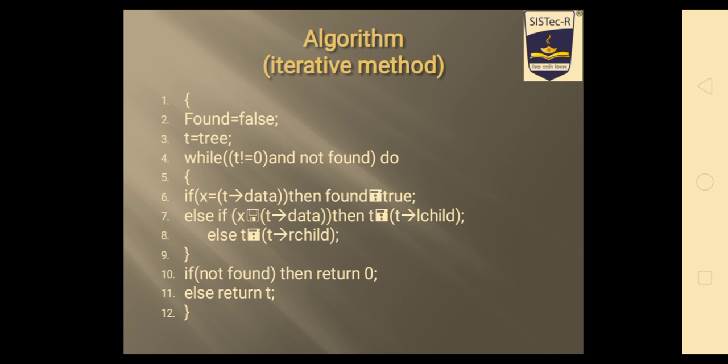Or if this is wrong, or else part, if this is not equal, so we have to move on else part, which is the comparison part. What will be the comparison? The comparison will be between data value of t and x. So if x is less than data value of t, then we move on left child of t. Or if this is not equal, so it will be obviously greater than the data value of t, so we move on right child of t. If not found, it means searching is unsuccessful, then return 0. Or if it is successful, then return t.